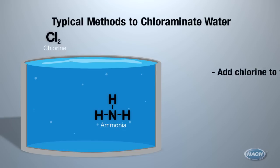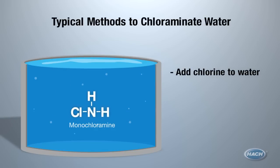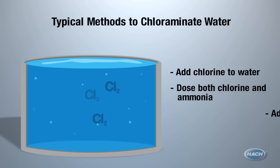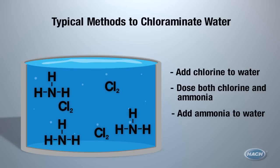When you chloraminate, you add chlorine to water with existing ammonia, or dose both chlorine and ammonia together, or you can add ammonia to water that has already been chlorinated in the treatment plant or another utility. In this example, let's pretend we are adding chlorine to water that already has ammonia.